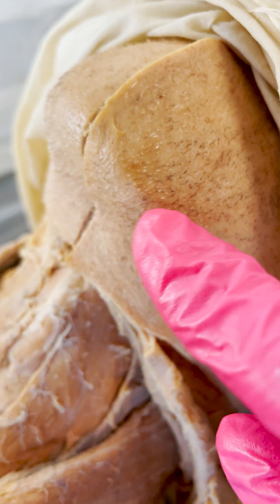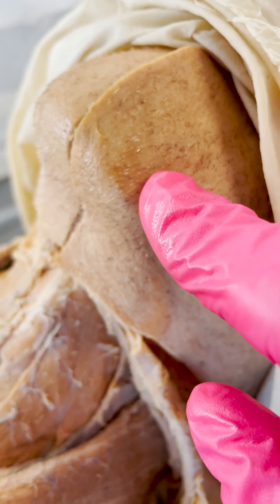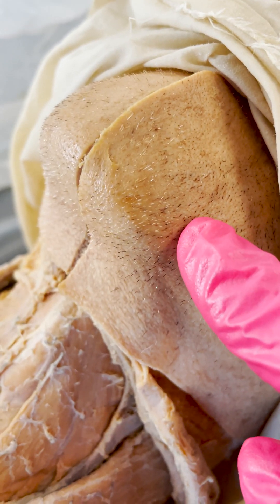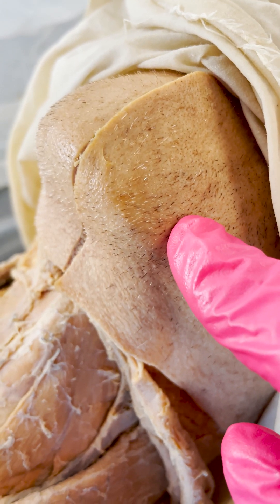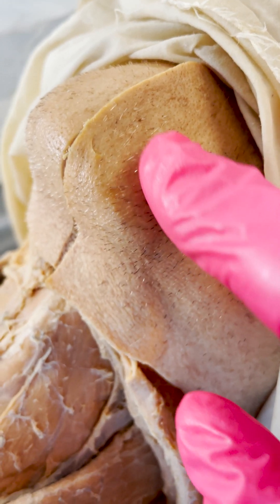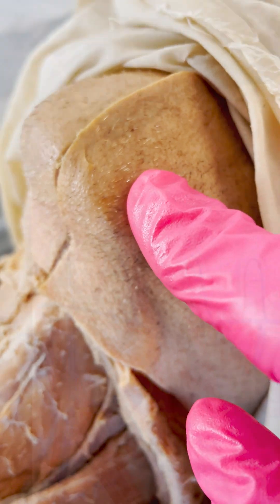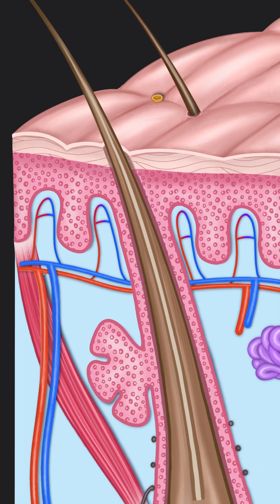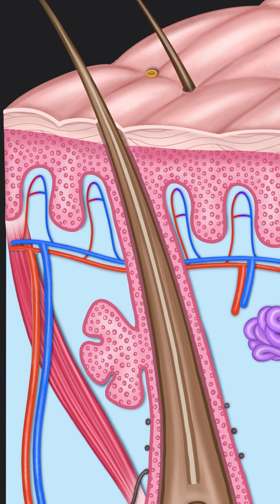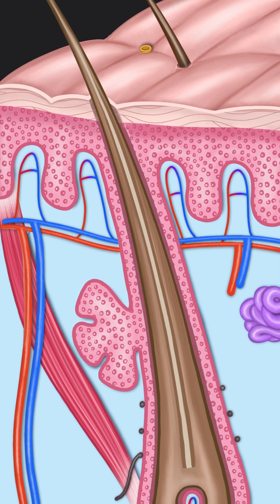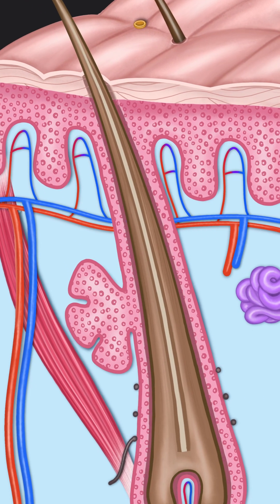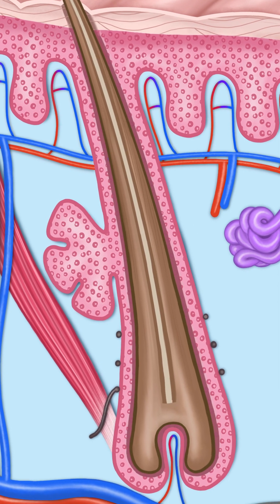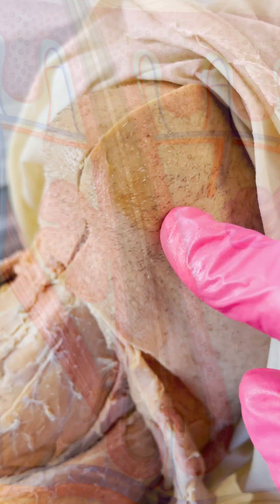First I want to talk about how hairs develop by a process called invagination. What I mean by that is the epidermal cells, or the cells that form the epidermis — the top layer of your skin — actually push and grow downward and create this invagination, or this pocket that we call the hair follicle.